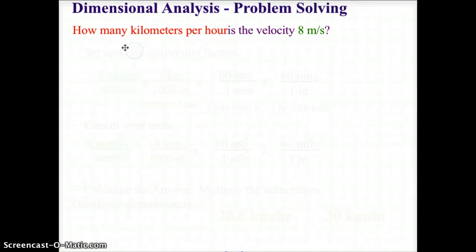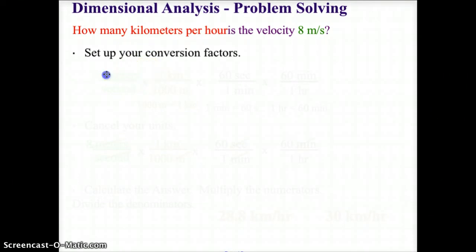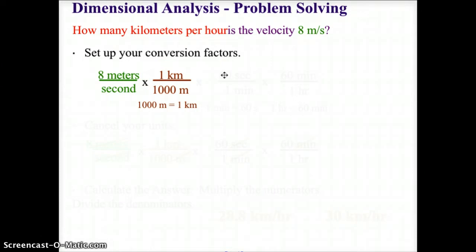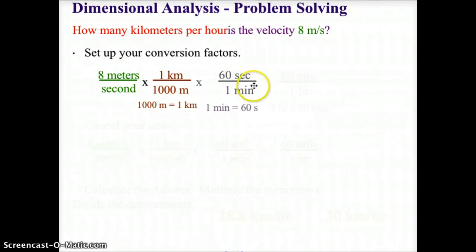We're going to set up our conversion factors starting with 8 meters per second. Then for every one kilometer we have 1,000 meters — putting meters in the denominator to cancel with the meters — and kilometers on top because that's what the question is asking for.